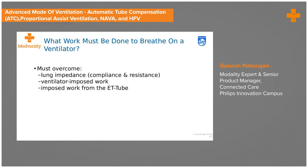Some of these things can be done by the equipment by setting parameters. One thing we have no control over is the imposed work from the ET tube. We set pressure support for continuously breathing patients, with values ranging from 8 cm to 12 cm. But is the full effect of that pressure support felt by the patient, or is there attenuation caused by the resistance of the ET tube?